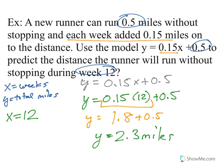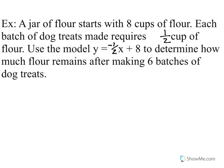When I add those two together, I end up with y equals 2.3 miles. So if this runner continues at this pace in week twelve, this runner will run 2.3 miles without stopping. This is the purpose of linear models: we can use them to predict future information based on a constant change over time.